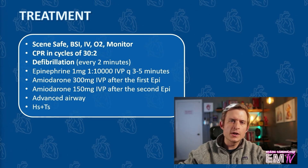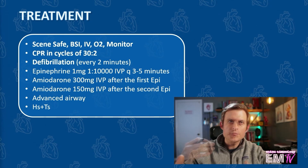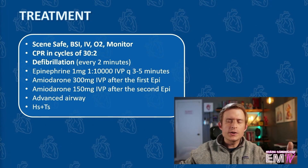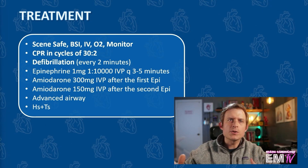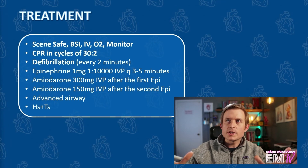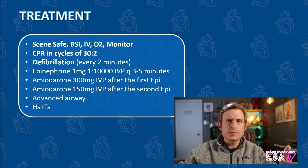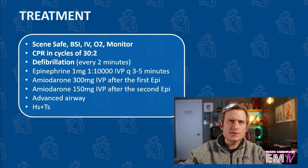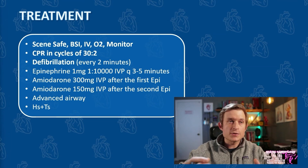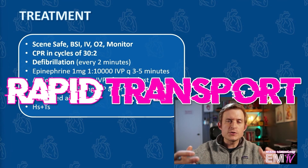Additionally, you could mention other ventricular antidysrhythmics like lidocaine or magnesium. But as an evaluator, I would be very happy to hear the epi and the amio — as well as defibrillation — as your treatment, and I would give you full points there. Beyond this, we're going to consider putting in an advanced airway, consideration of our H's and T's, and rapid transport.